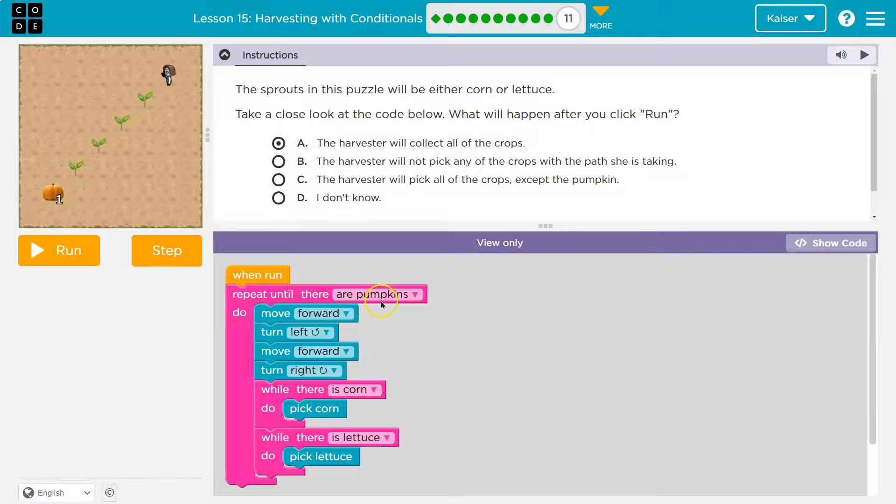So I'm not at a pumpkin. Repeat till there are pumpkins. Well, there aren't pumpkins, so do this. Okay, move forward. I think I'll move forward one. Then what?